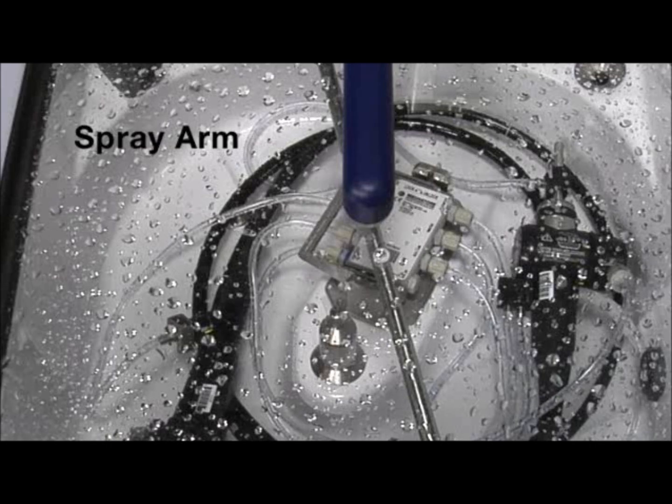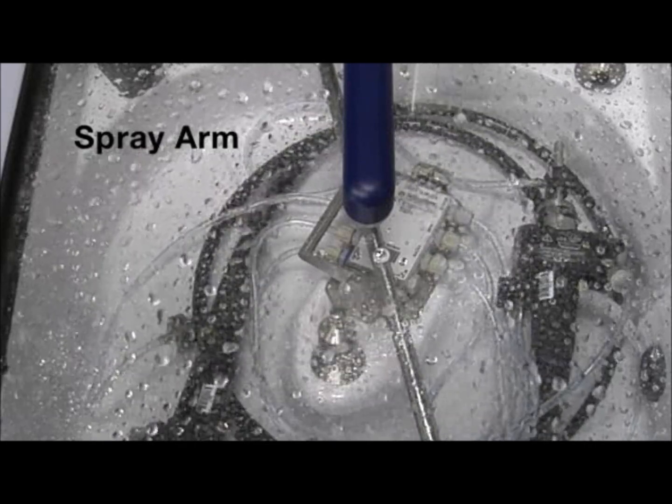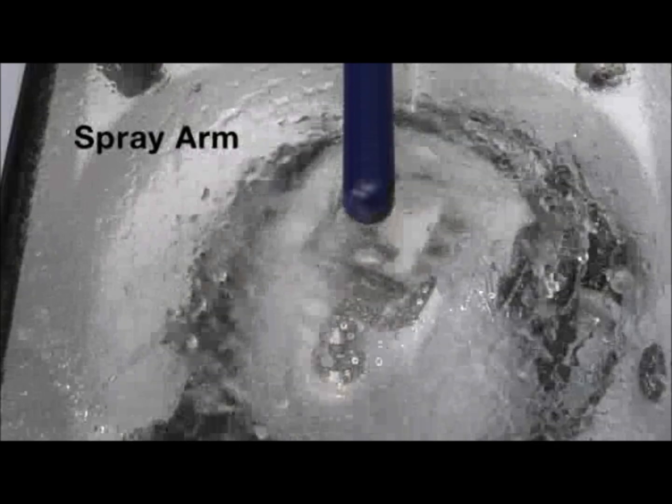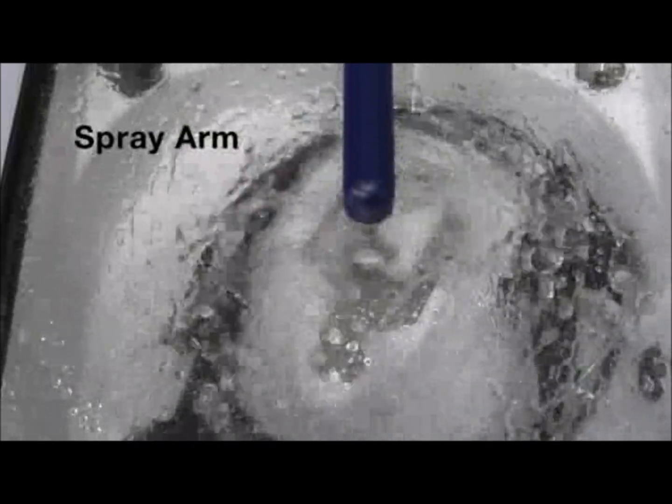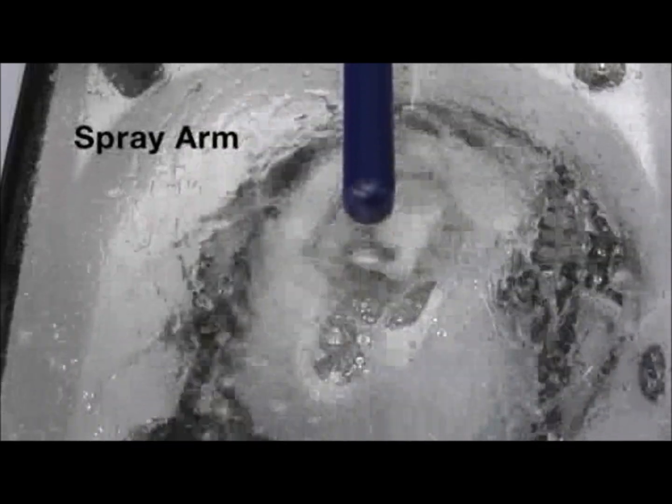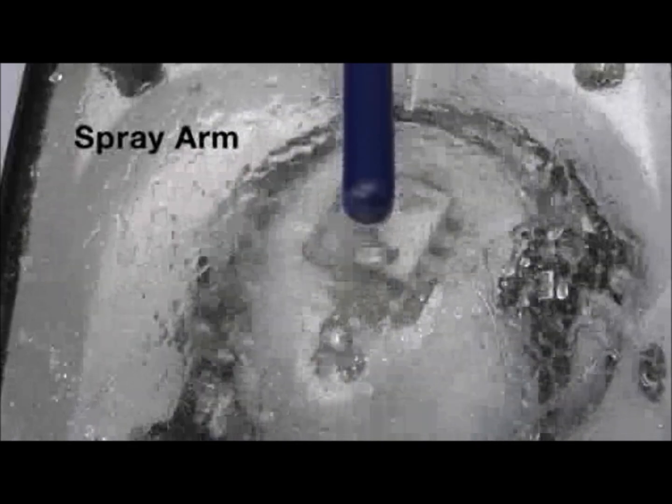The spray arm, located on the basin lid, provides fluid spray for disinfection and rinsing of the exterior surfaces of the endoscope. The use of the spray arm reduces the amount of fluids needed during the reprocessing cycle.